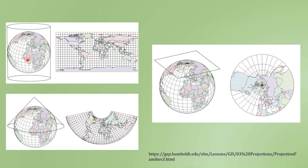So here we have the representation of the cylindrical projection, conical projection, and the planar or azimuthal projection. In the cylindrical projection, all the vertical lines represent the meridians and all the horizontal lines represent the parallels. In the conical projection, the straight lines spreading from the arc represent the meridians and the parallels are represented as curved lines. In the planar and azimuthal projection, the center point is the pole, the meridians spread from this center point, and the parallels appear in the form of concentric circles.